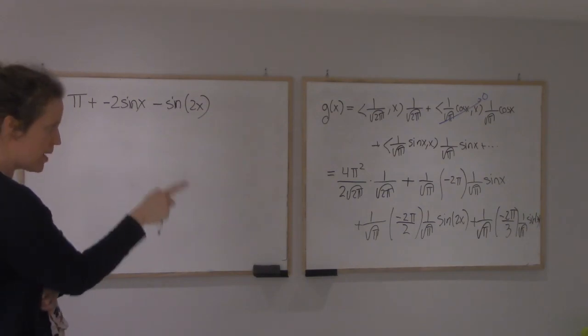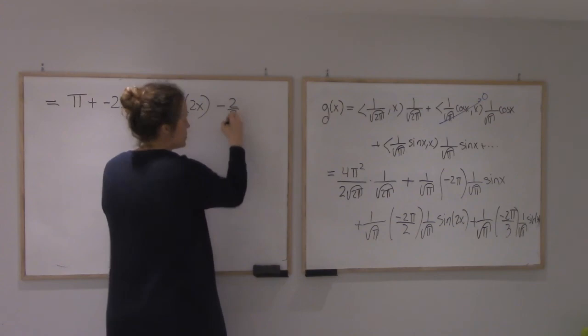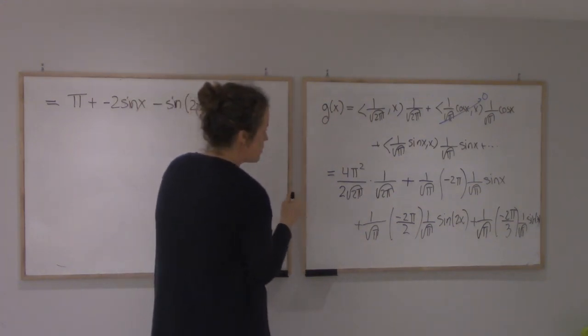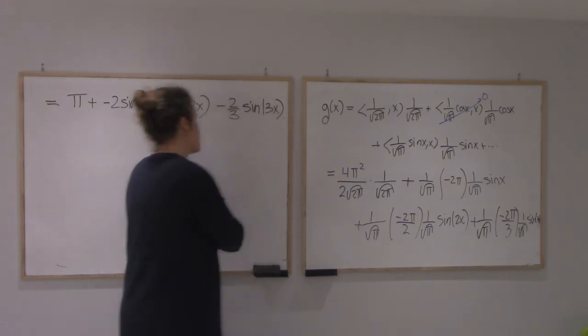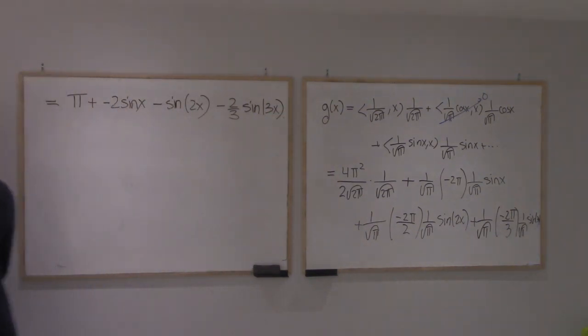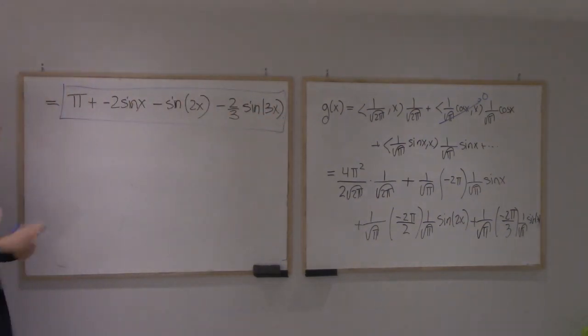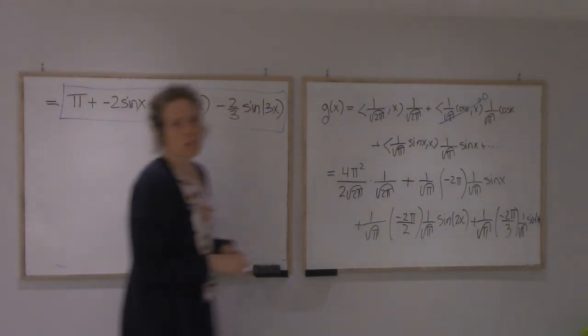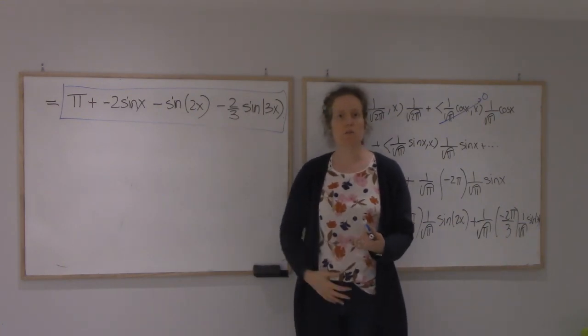And then the π's will cancel, and I'll get minus 2 thirds sine of 3x. So that's the best approximation of x by trigonometric polynomials of degree 3 or less.